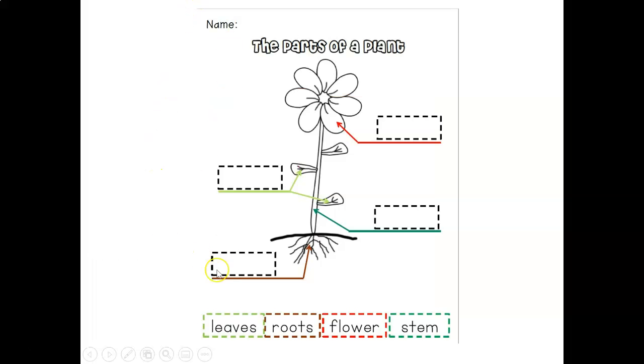Now this is a picture of a plant and we're going to label its parts. So let's see. The first one, this one right here, those are the roots of the plant. The next one, this is called the stem.